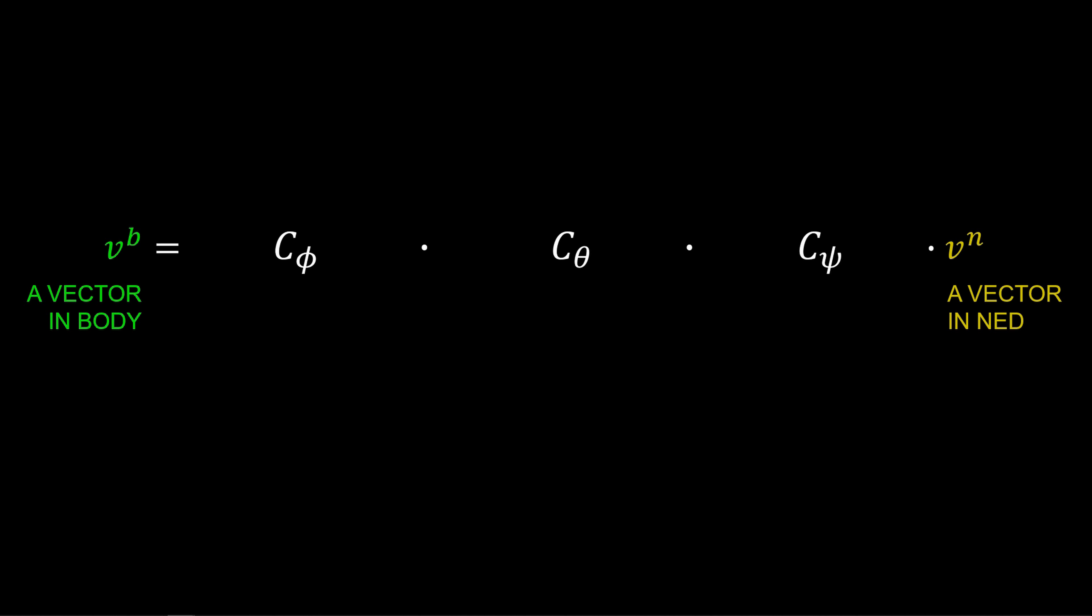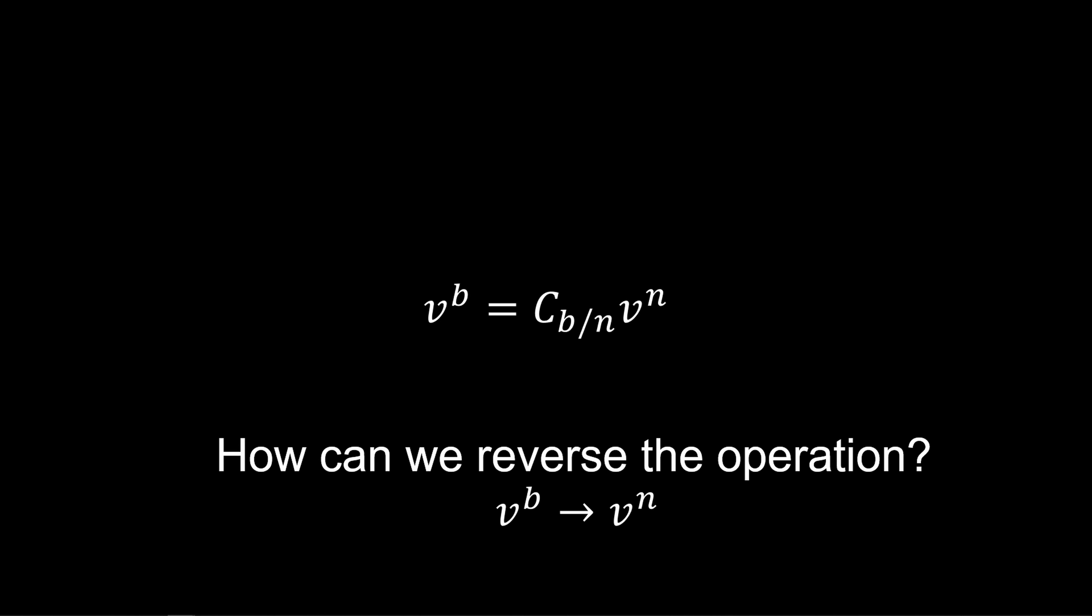The three planar rotation matrices, multiplied together, create a direction cosine matrix, or DCM for short, that is determined from the instantaneous Euler angles. Now, what if we wanted to reverse this operation and go from body to northeast-down?